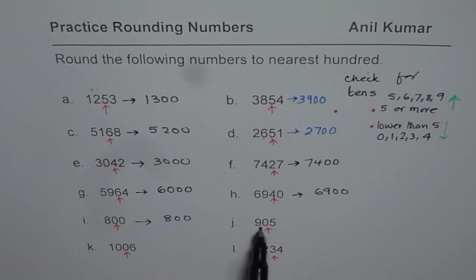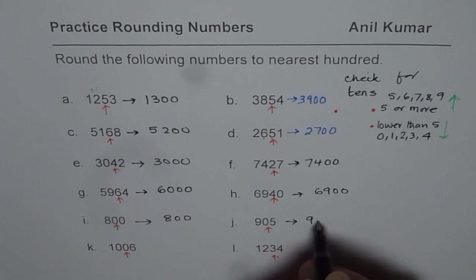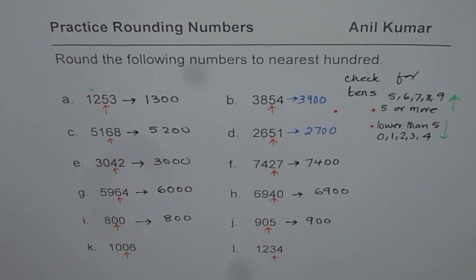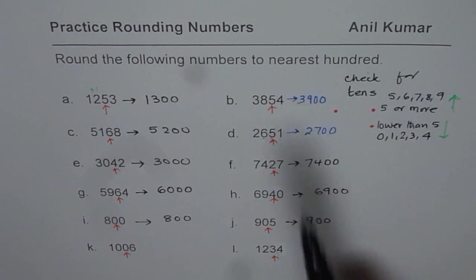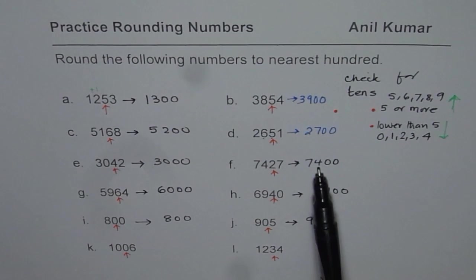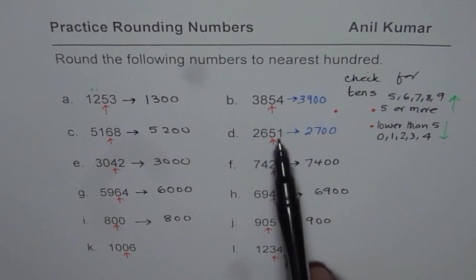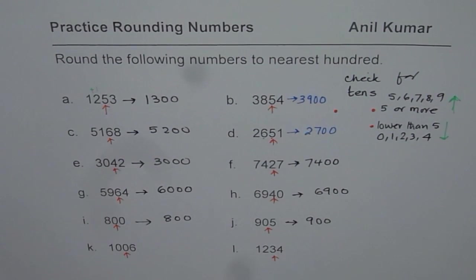905. It could be rounded to 900 or 1000. Since we have 0 in 10 place, we'll select the lower one, which is 900. Do you see that? What you also see here, we can round 800 to 800. There is no change in this number. In all rest of the cases, after rounding to 100, the number either increases or it may decrease, depending on the number in 10s place. This is very important to understand.